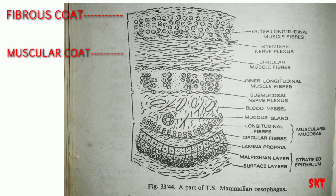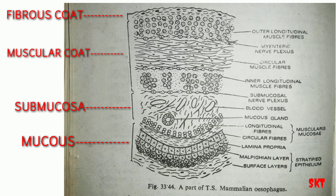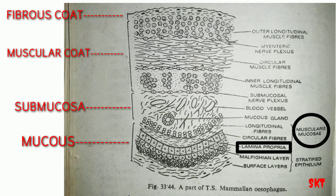The third coat is the submucosa, which contains numerous mucous-secreting glands, blood vessels and lymphatics. The last and innermost coat is the mucous membrane, which contains three layers. From outside: the muscularis mucosae, which is smooth muscle fibers; the lamina propria, which is connective tissue; and the innermost, stratified epithelium, containing many layers of cells.